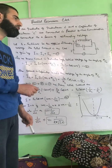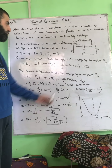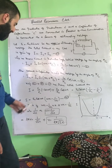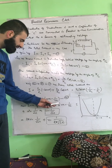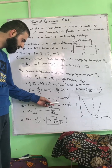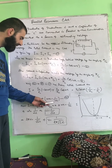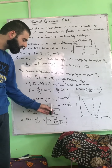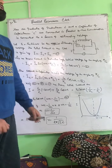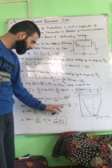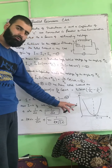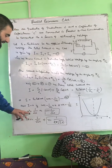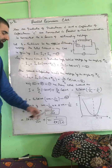Now we consider the condition for resonance. The current becomes zero when the bracketed term equals zero — that is, when ωC − 1/(ωL) = 0. This gives ωC = 1/(ωL), so ω² = 1/(LC), and therefore ω = 1/√(LC).